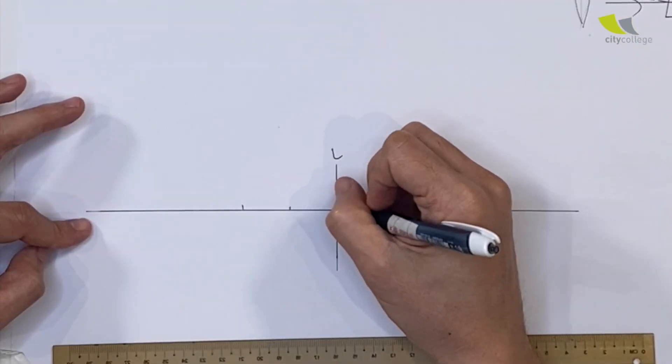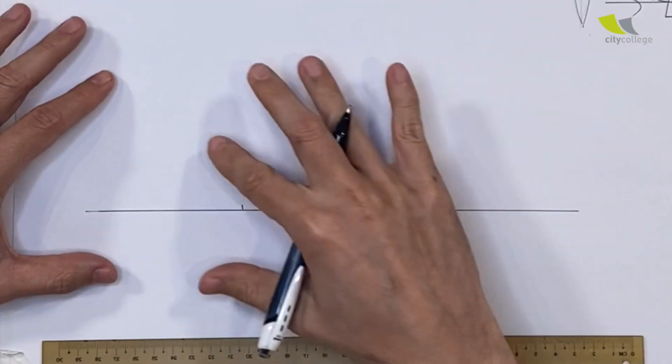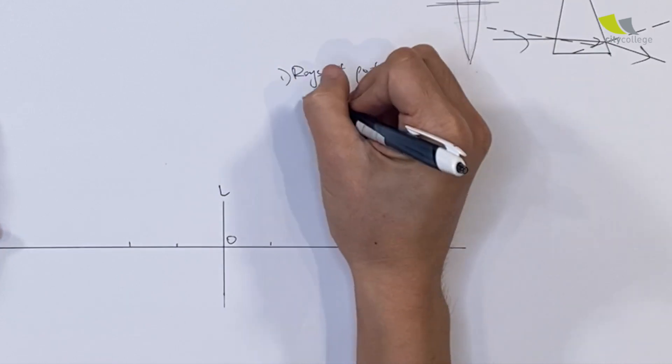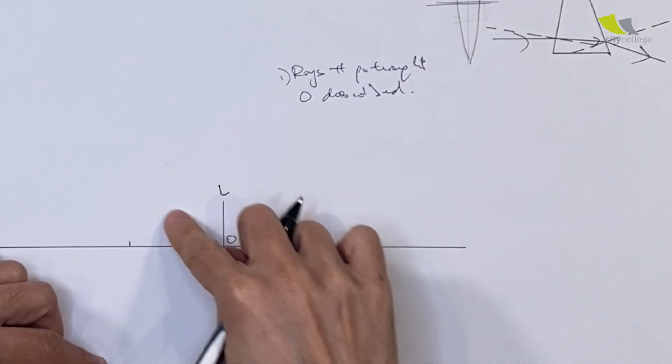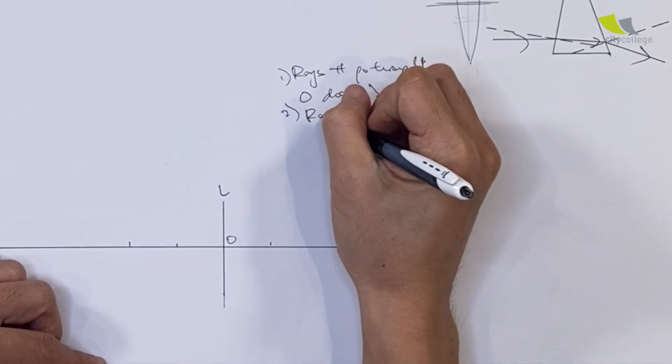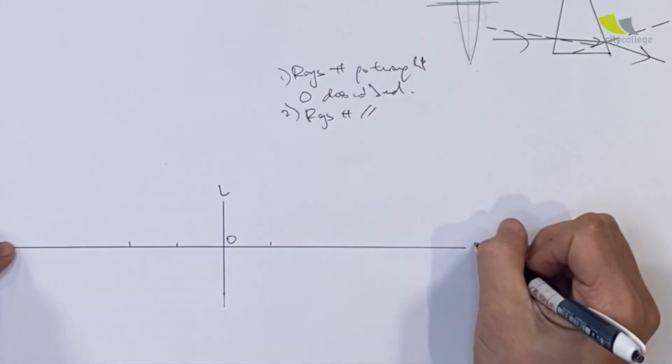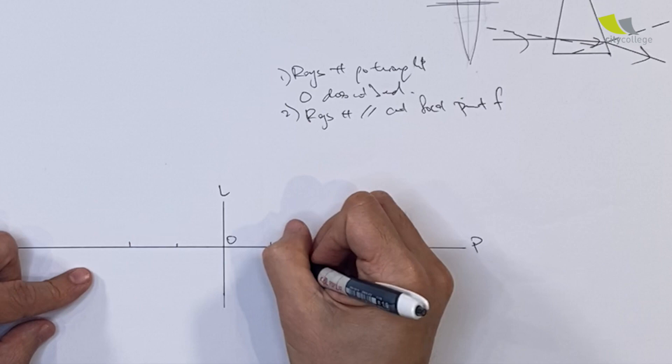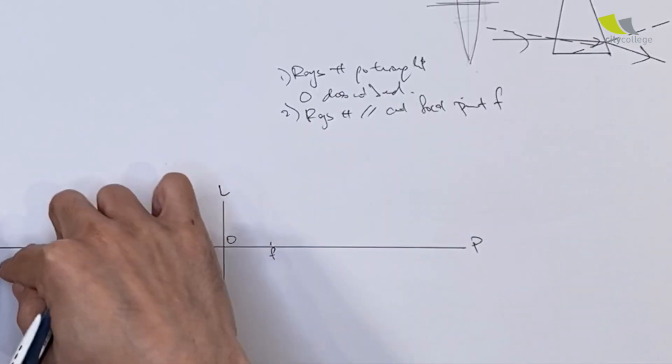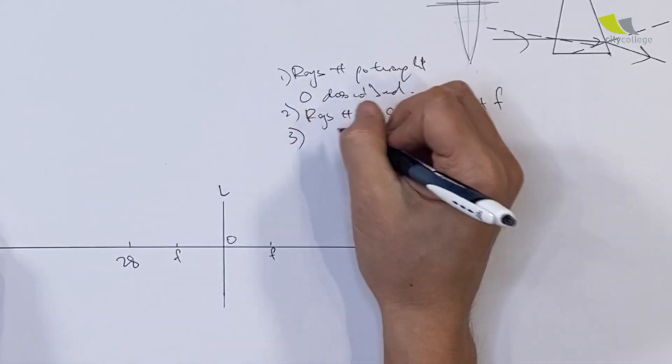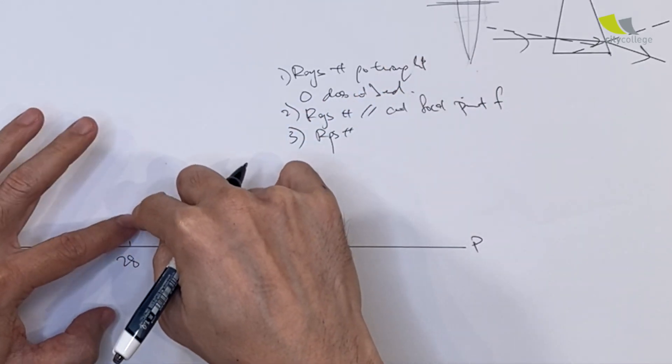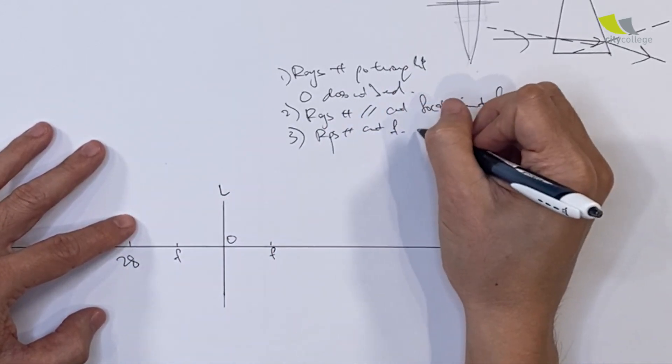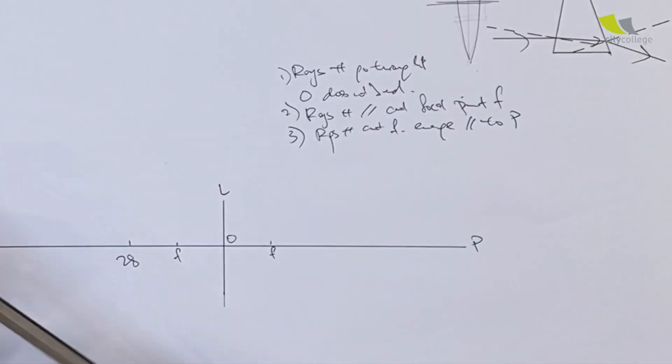When you draw ray diagrams of converging lenses, there are three rules. Rule number one: rays that go through optical center O do not bend. Rule two: rays that are parallel to the principal axis will cut the focal point F. So this is my F, this is 2F. Any line that's parallel to the principal axis will cut towards focal point F. Rule three: rays that initially go through the focal point will emerge parallel to the principal axis.